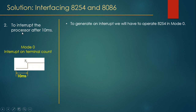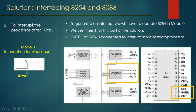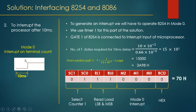Part 2: generate an interrupt after 10 milliseconds using Mode 0 on counter 1. The OUT pin of counter 1 connects to the interrupt input of the 8086. N = 10 ms / 0.66 µs = 15,000 states, which converts to 3A98H in hexadecimal. The CWR value: SC=01 (counter 1), RL=11, mode 0 bits=000, BCD bit=0, giving CWR = 70H.